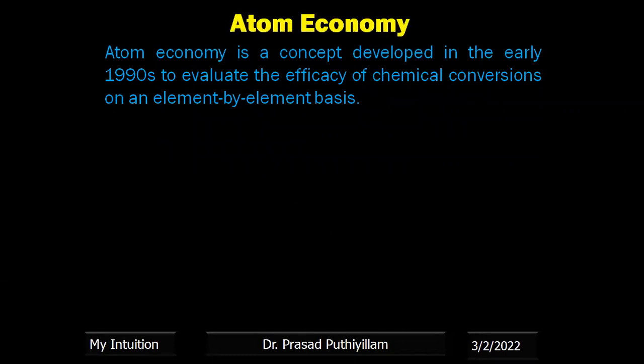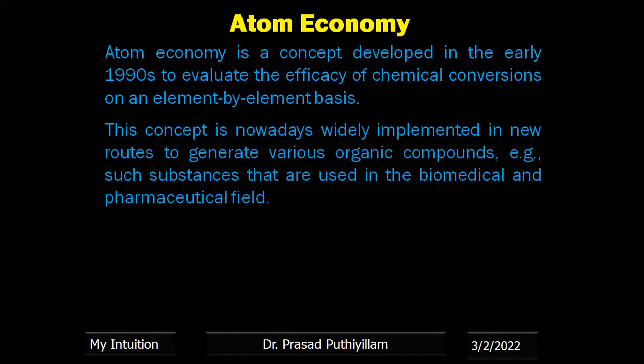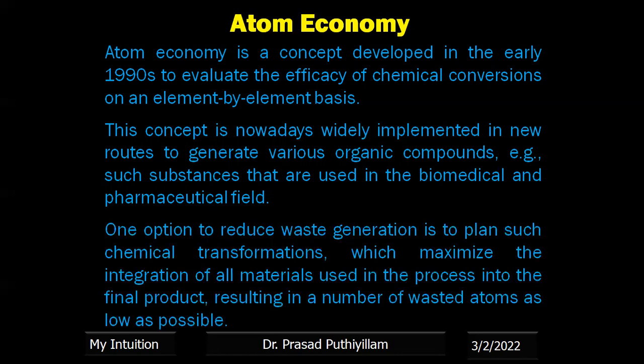Atom economy is a concept which was developed in the early 1990s in order to evaluate the efficiency of a chemical reaction or chemical conversion on an element-by-element basis, or atom by atom. By counting the number of atoms in both the reactant side as well as the product side, if all atoms are converted into useful product, then we can say it is 100% atom economy. This concept is nowadays widely implemented in new routes to generate various organic compounds used in biomedical and pharmaceutical fields, mainly medicine and drug manufacturing, because there is no wastage and it is more efficient. One option to reduce waste generation is to plan chemical transformations which maximize integration of all materials into the final product, resulting in wasted atoms as low as possible. That means we are not going to waste any atom.